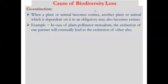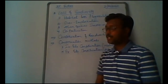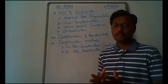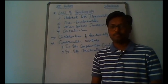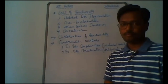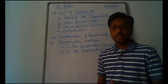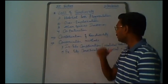All four causes — habitat loss and fragmentation, overexploitation, alien species invasion, and co-extinction — together form the Evil Quartet, which is most dangerous for the loss of biodiversity. Since we are losing biodiversity, we must protect it, making conservation of biodiversity necessary.